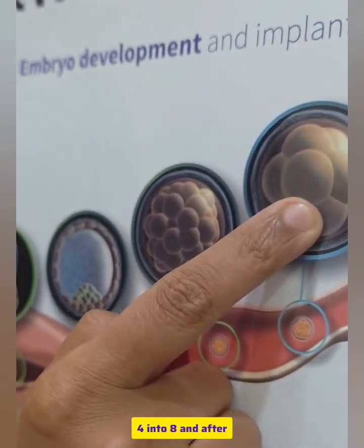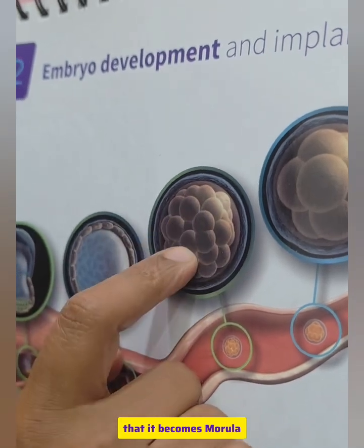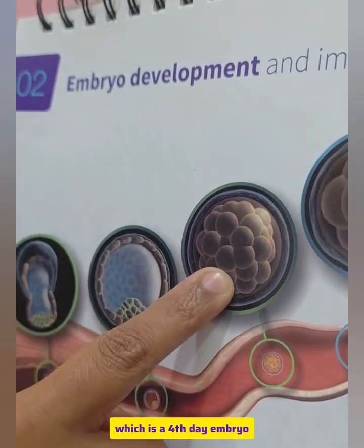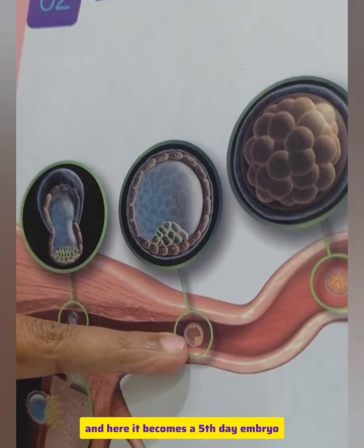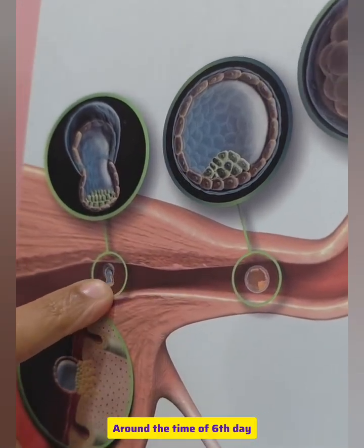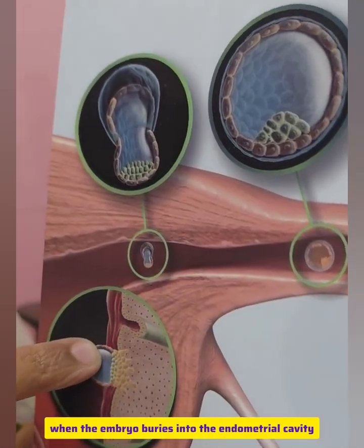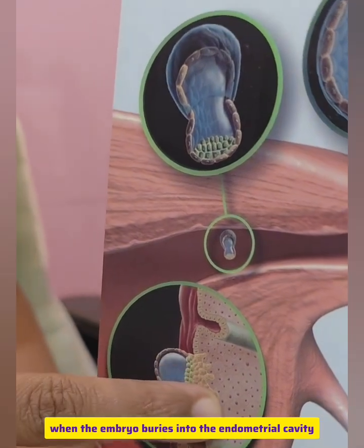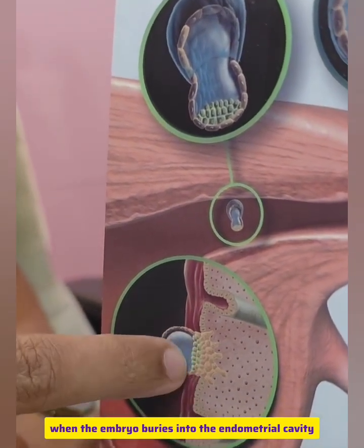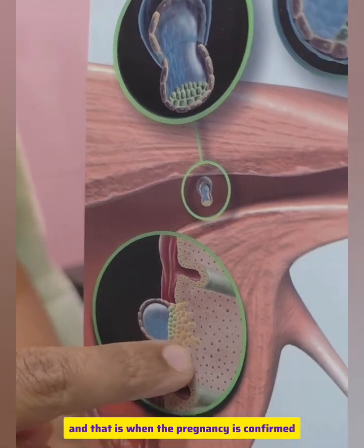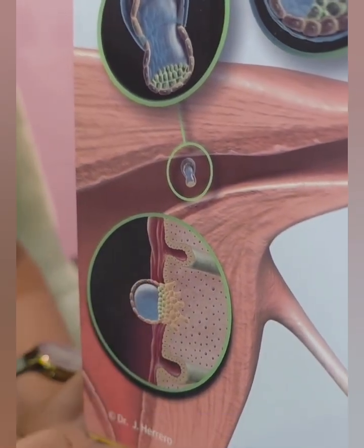This cell divides: one cell divides into two, two divides into four, four into eight. After that it becomes a morula, which is a fourth-day embryo. Around the fifth day it becomes a blastocyst, and by the sixth or seventh day, the embryo buries into the endometrium, which is when the pregnancy is confirmed.